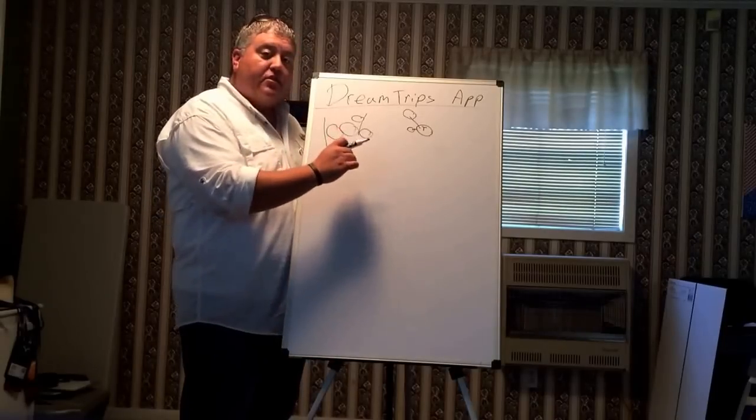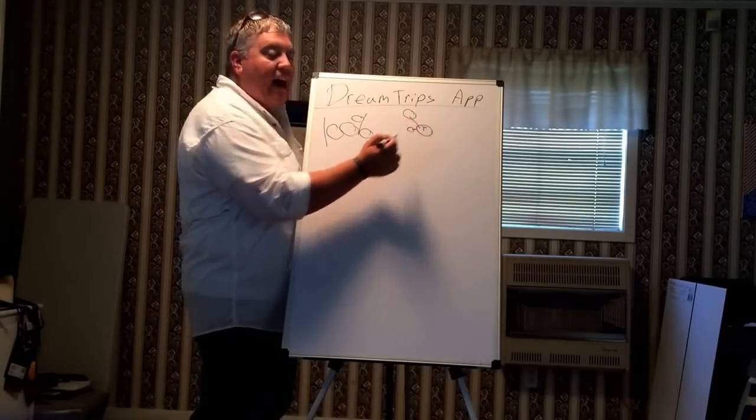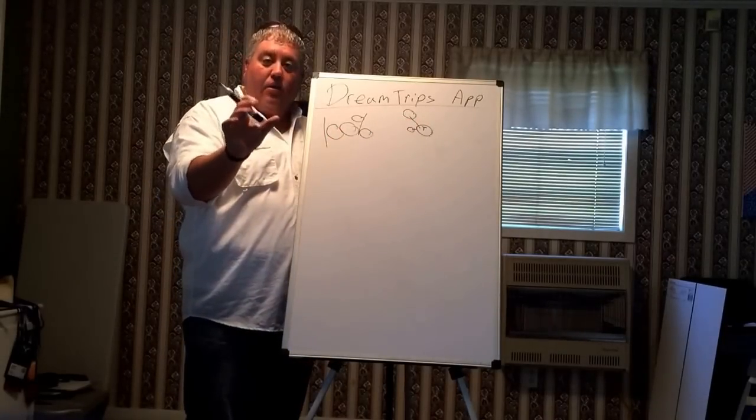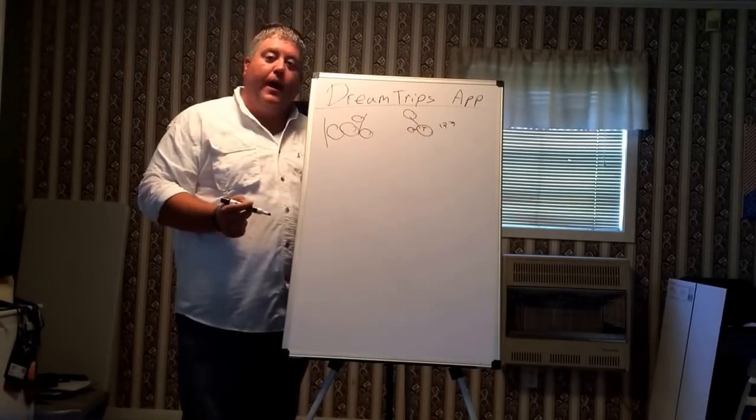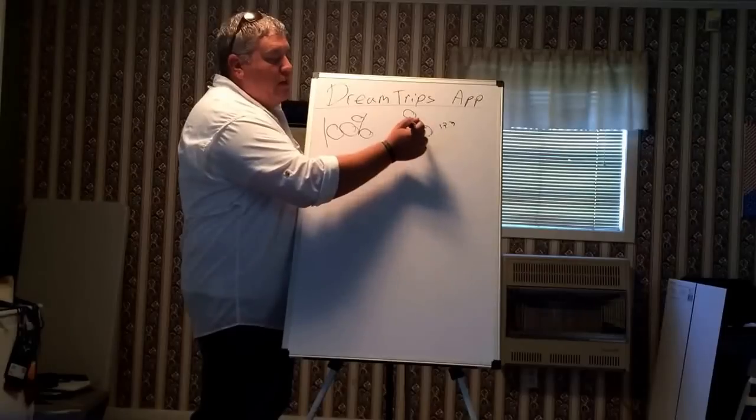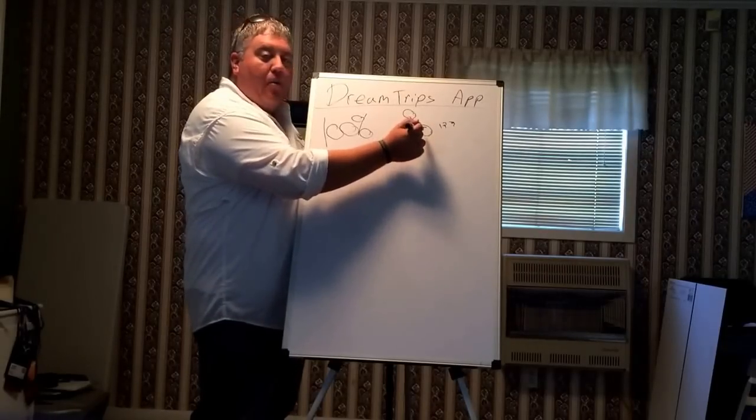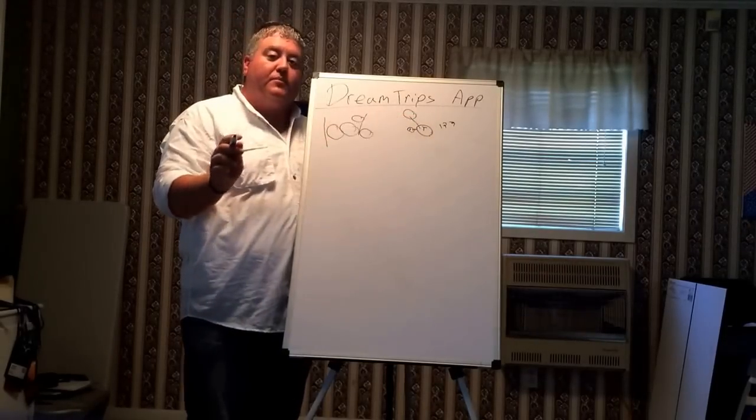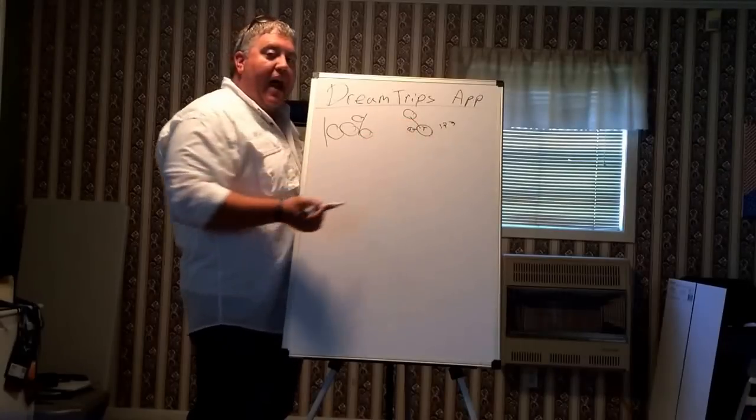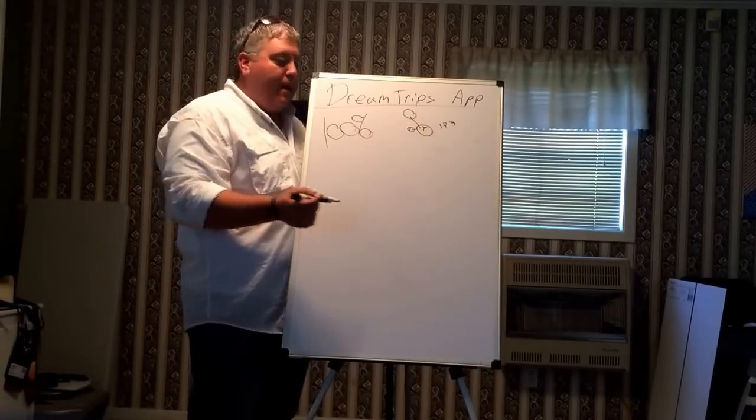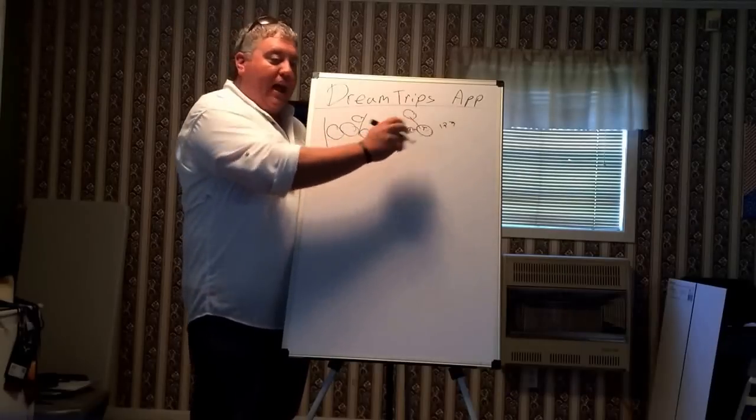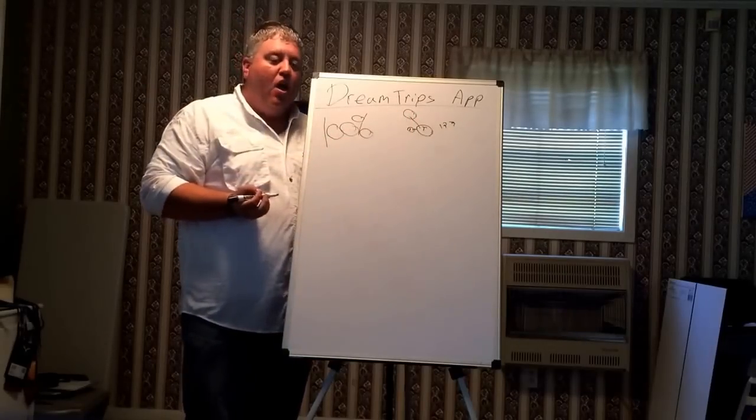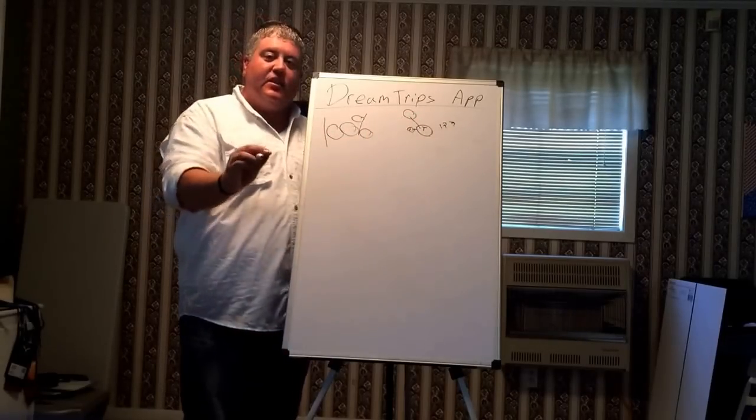So she downloads the DreamTrips app by using Tom's user ID code and her membership code. We're going to call that code 123 for right now. So Sally is going to use Tom's code to get the new DreamTrips app. So they go onto the Apple iTunes store or whatever it may be and download the DreamTrips app and go 123. And that's Tom's code, right?